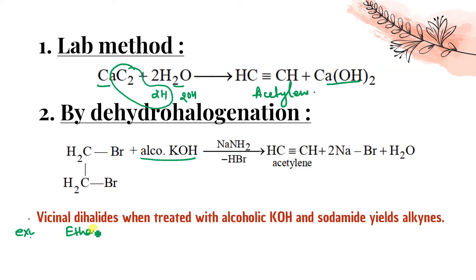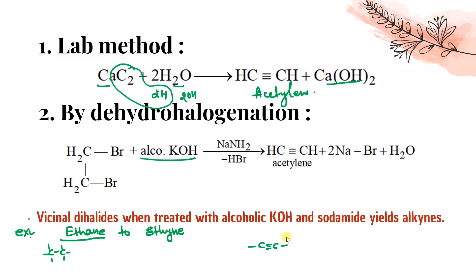Let me explain with a conversion example: convert ethane to ethyne. The initial structure is ethane (C-C single bond) and we need to get ethyne (C triple bond C). Step 1: chlorination in presence of Cl₂ gives chloroethane.